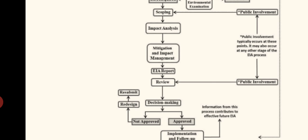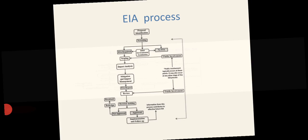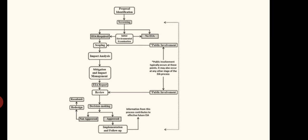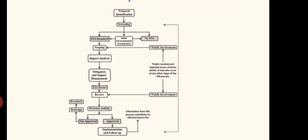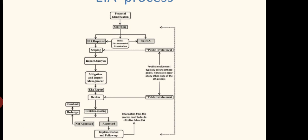Once the EIA report is submitted, the report goes for review. The report is published everywhere and anyone can study it. If anything is not mentioned or something is missed, it can be pointed out. In this review stage also, public involvement takes place. So public involvement occurs in two stages: the scoping stage and the review stage.